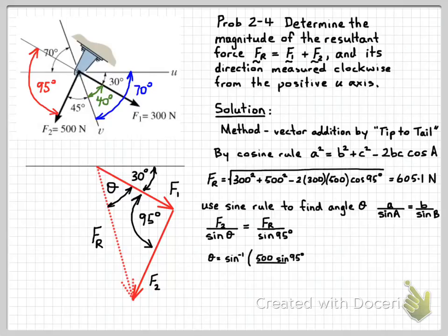Rearrange that equation to solve for theta, so theta equals sine to the minus 1, or arcsin if you're more familiar with that form. And then we can just solve for that angle, which is 55.4 degrees.